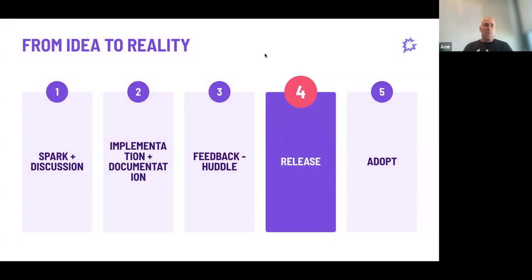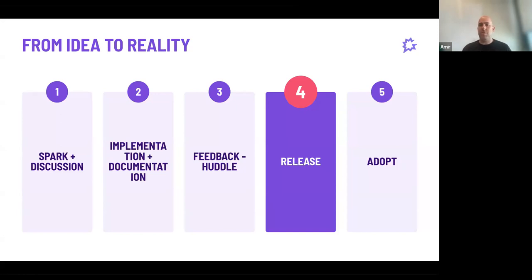How do we go from idea to reality and actually implement something into the product? Some developer might spark an idea, discuss it with their manager or peers, and something builds up. Then we start to implement it in some small portion — a feature, existing tech debt, or whatever. During that implementation, we try to also add documentation so we can share it more efficiently. Then we huddle around the idea and get feedback from the entire guild. Then we can hopefully release the new idea or drop it if it's not a fit. The last step is adoption — if something went really well, we want to adopt it across all teams.